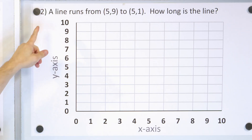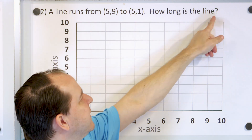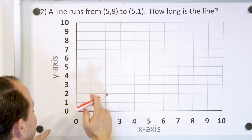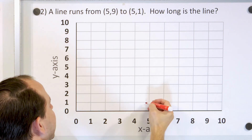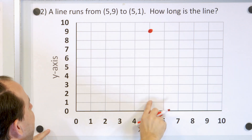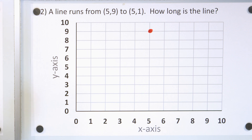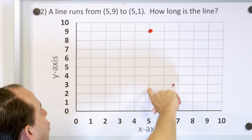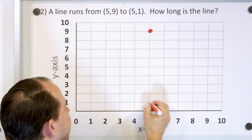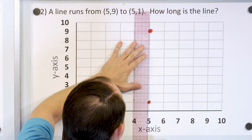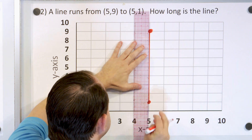Problem number two: a line runs from 5,9 to 5,1. How long is the line? Let's plot the points. Five comma nine — X is 5, and Y is 9, so the point is right here at that intersection. Second point, five comma one — X is 5, and Y is 1, so we go up one unit. That's the end point of that line. Now let's connect these points so we can see what we're dealing with. The line would look something like this.